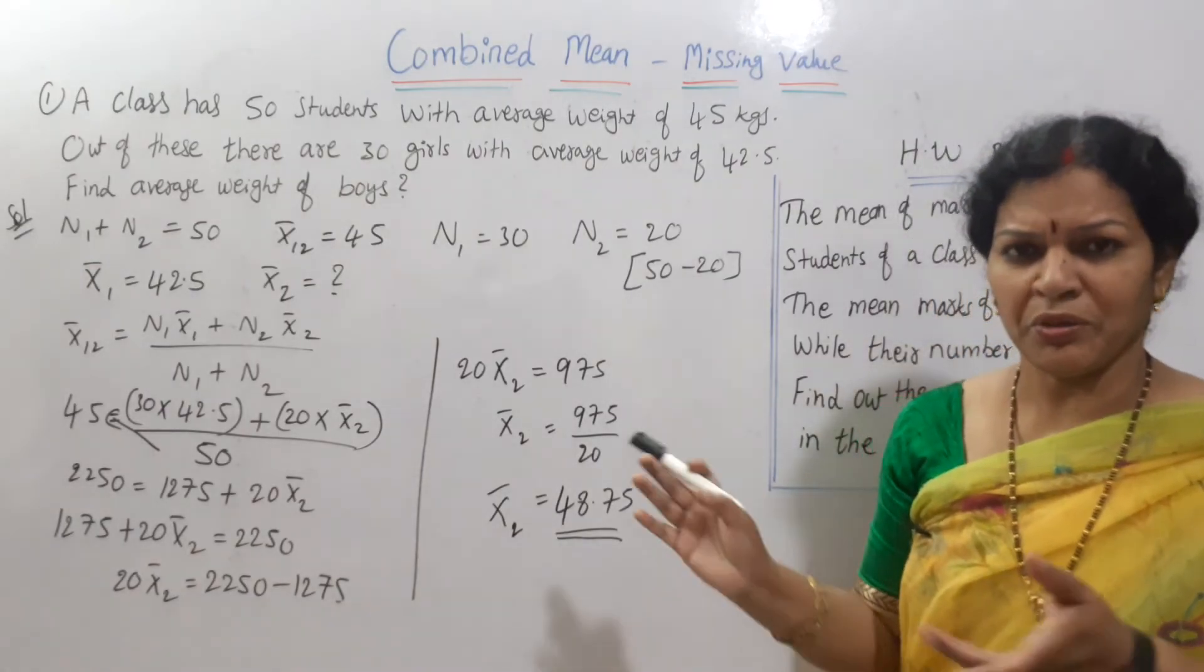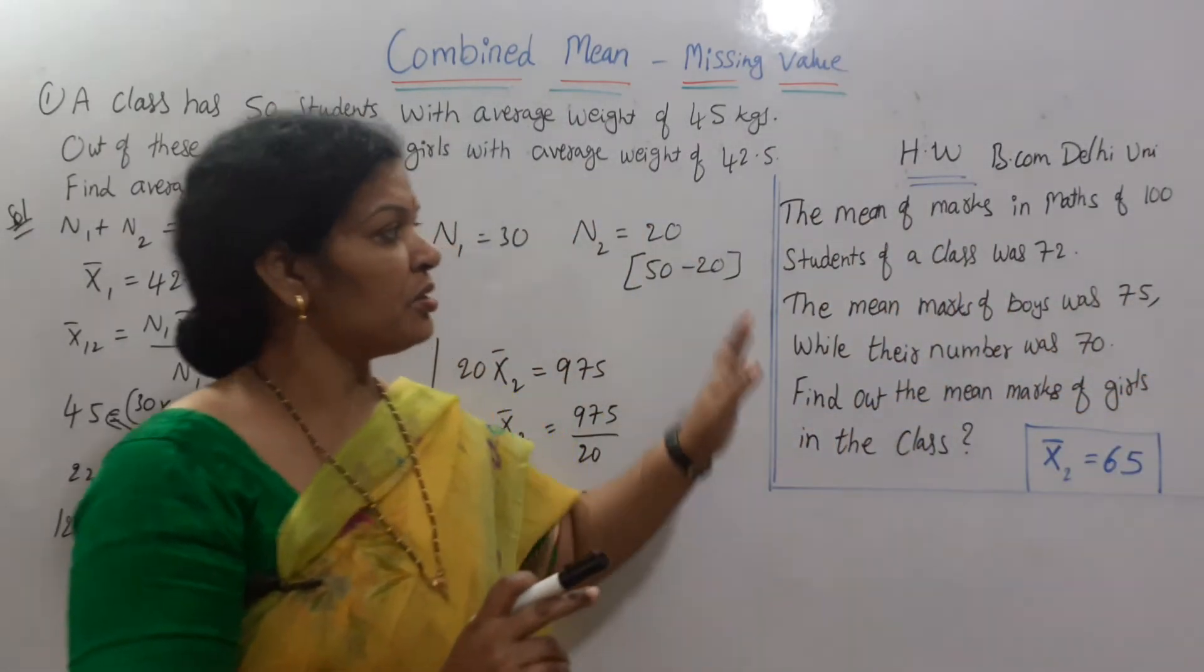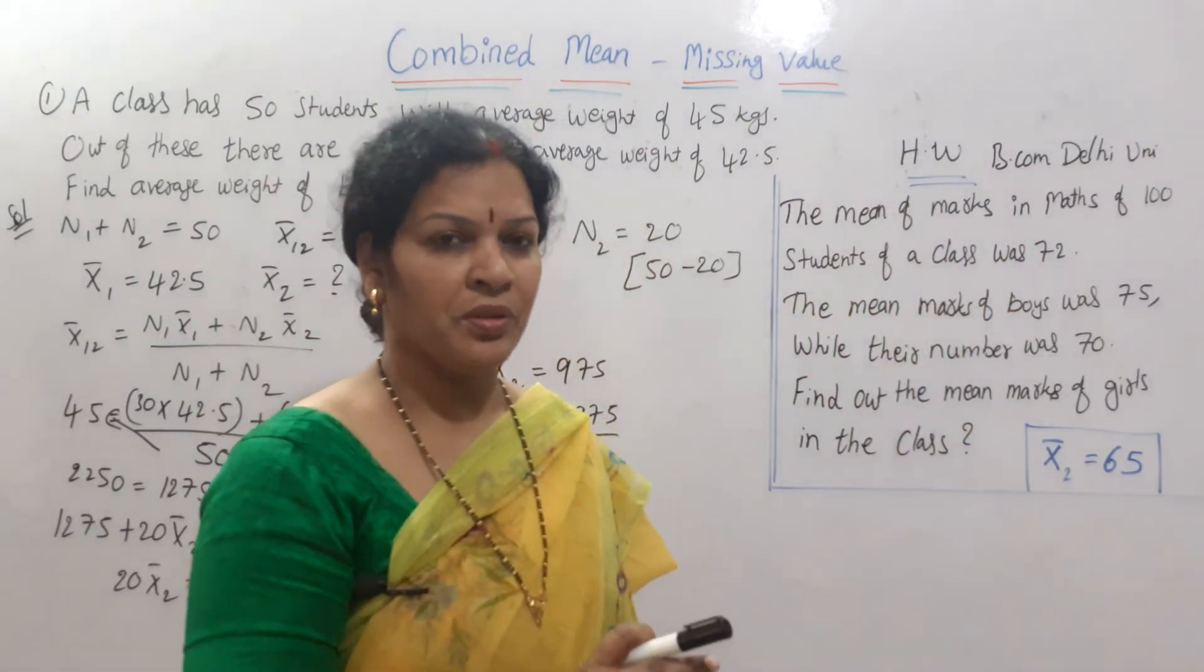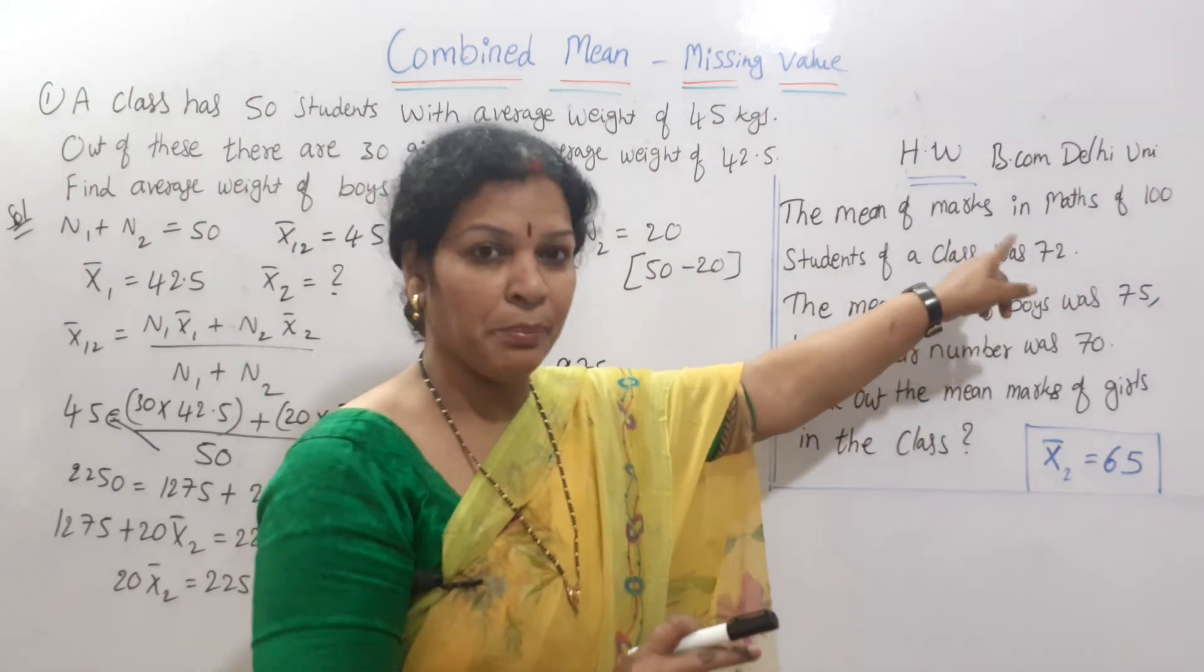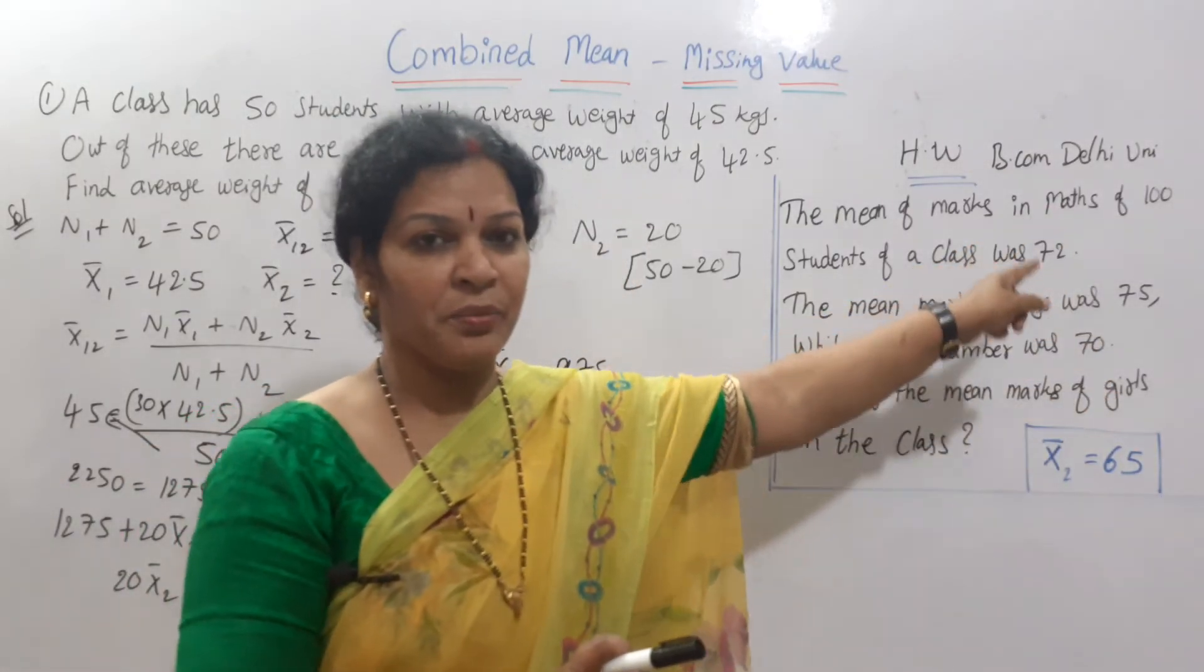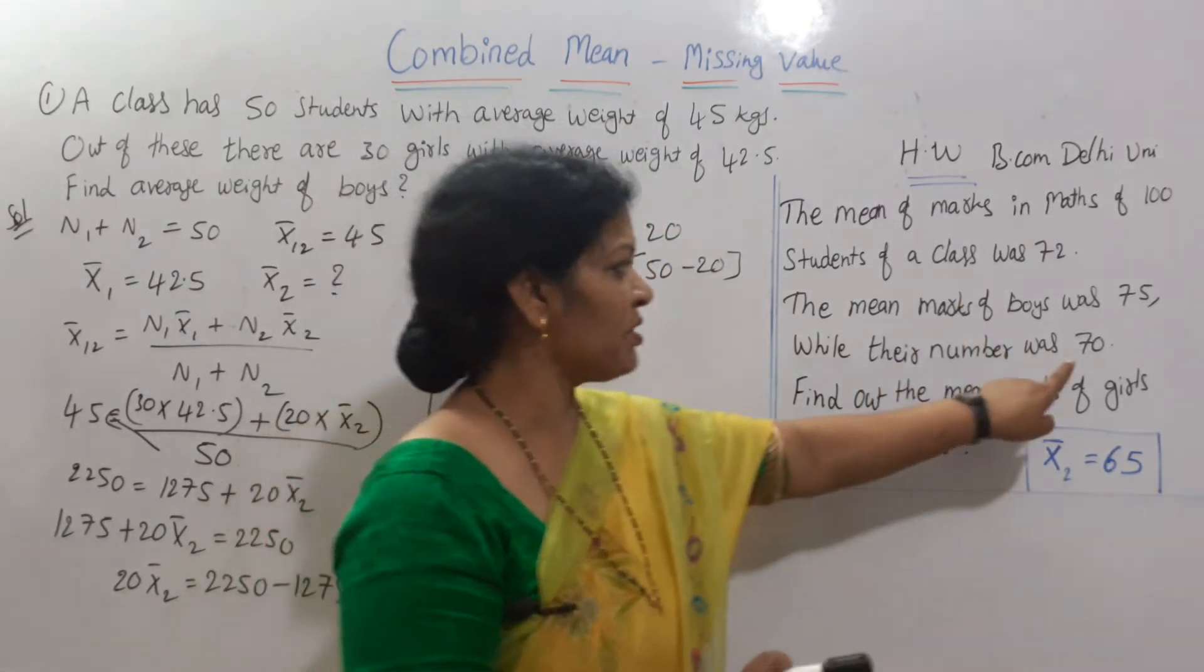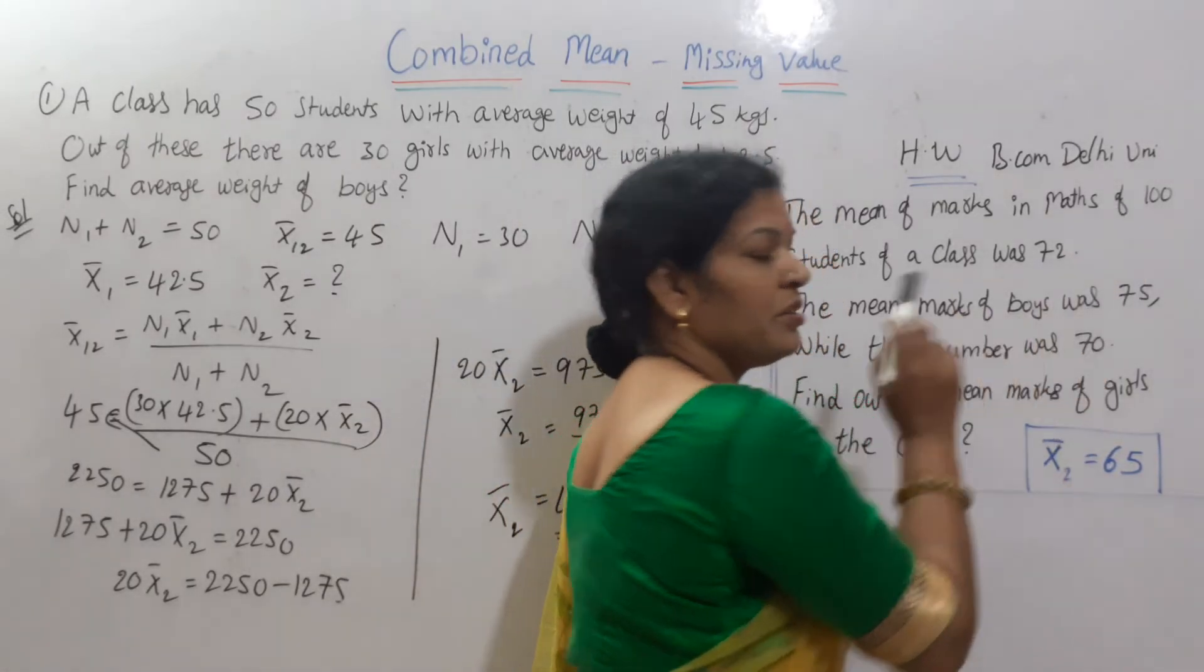No need to take. If you want, you can take screenshot. This is the problem. If you understand this problem, now here is a homework problem for you. This is a Delhi University problem I have taken. Same type of problem. The mean of marks in max of 100 students of a class was 72. Total students are 100, N1 plus N2 is 100. And the students' combined mean is 72. The mean marks of boys was 75. Boys are 75, means girls are 25, 100 minus 75. While their number was 70. So the mean marks of boys was 75, while their number was 70. Number 70, X bar 1 is 75. So their number is 70, means girls is 100 minus 70, 30.